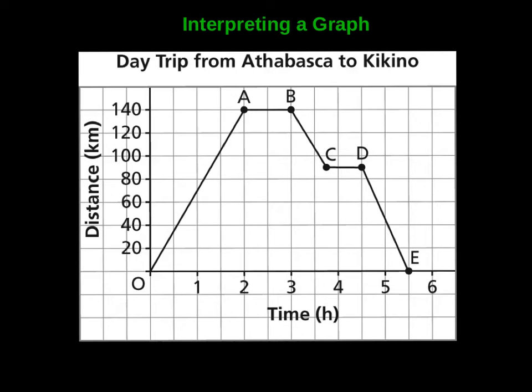Okay, so this next slide here, this next graph shows us what a day trip from Athabasca to Kikino looks like. And again, here we notice we have time and we have distance. And we want to know what do you think is happening along here? So in two hours, they seem to go 140 kilometers. And then we notice over here in this part that you've got no distance being covered. So what are they doing for one hour?